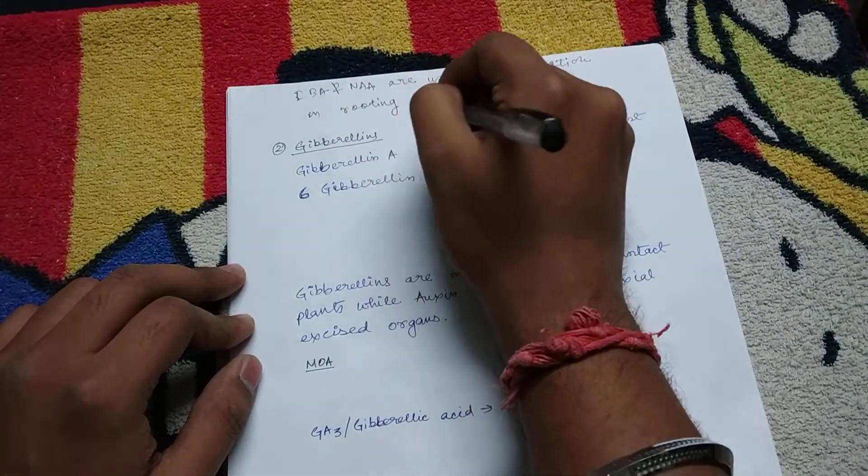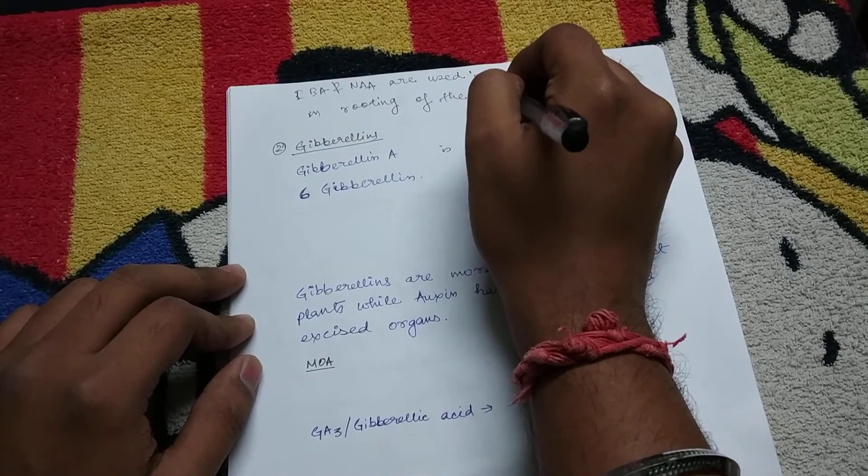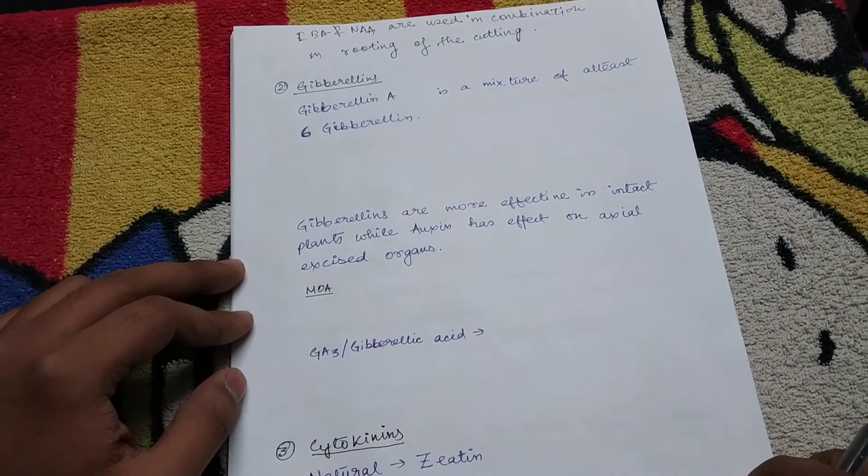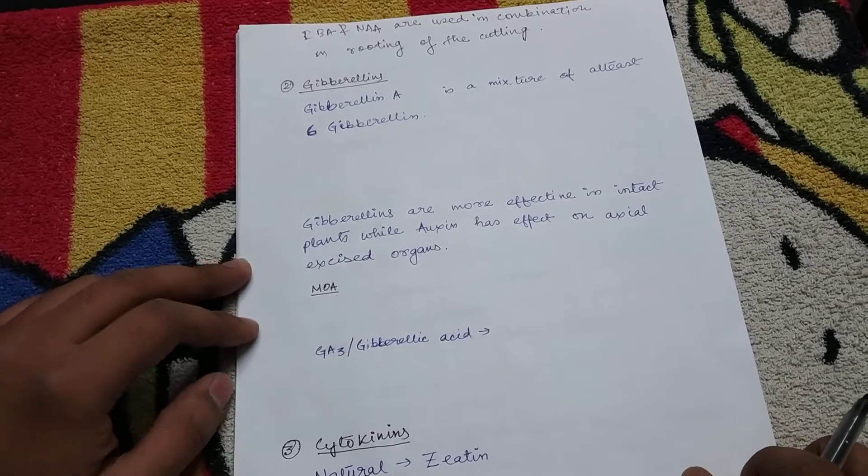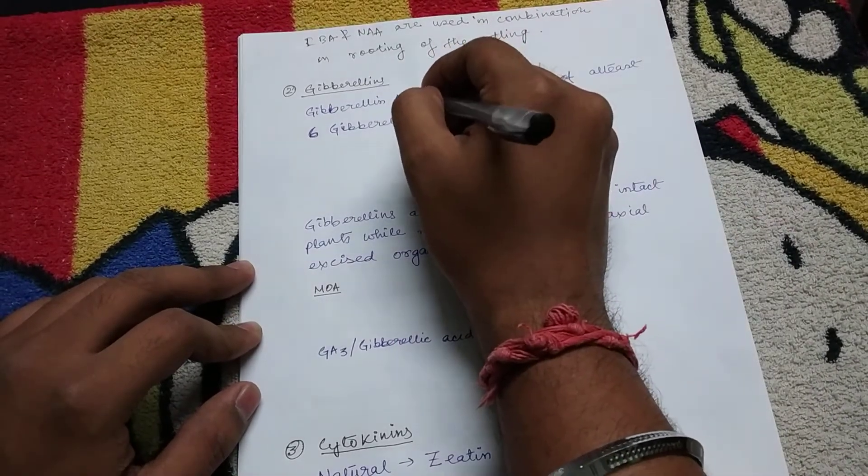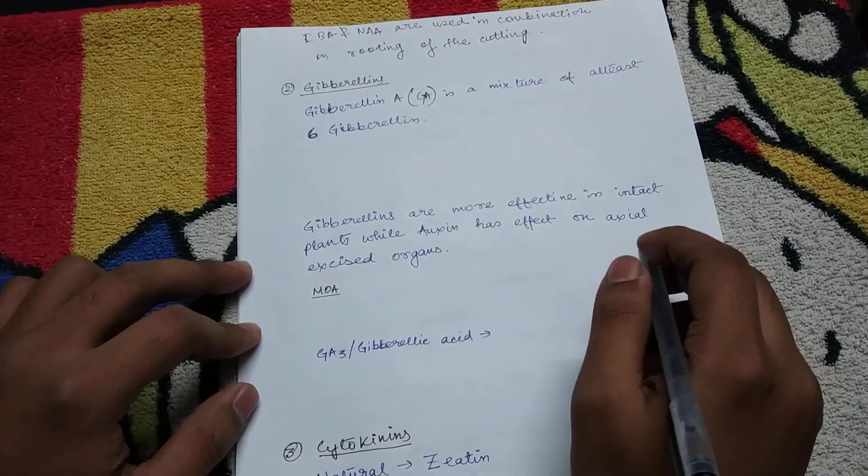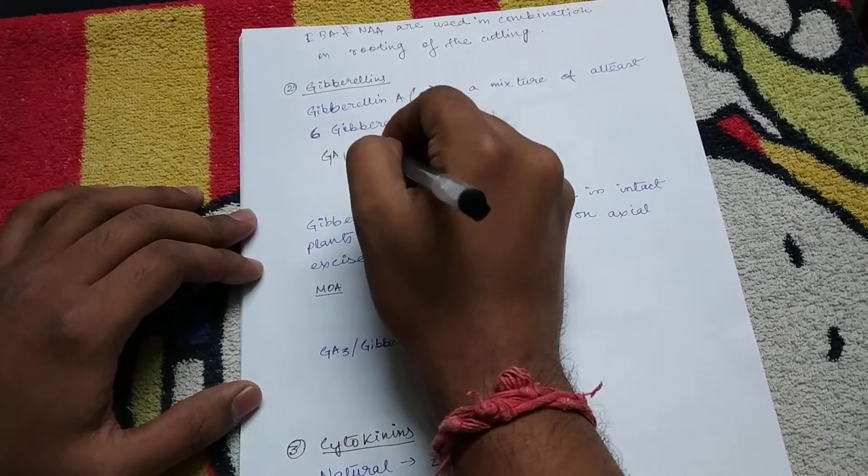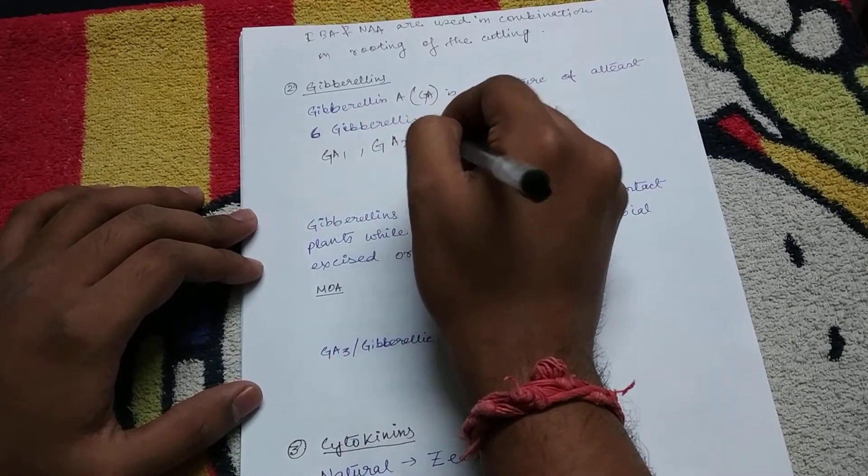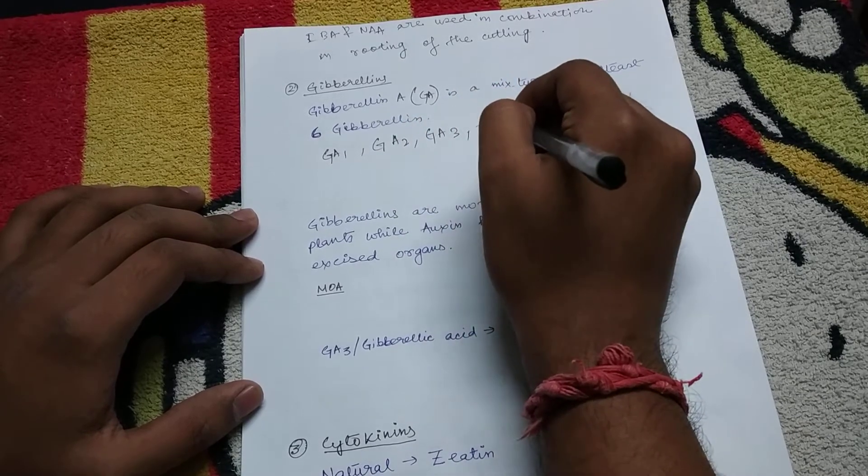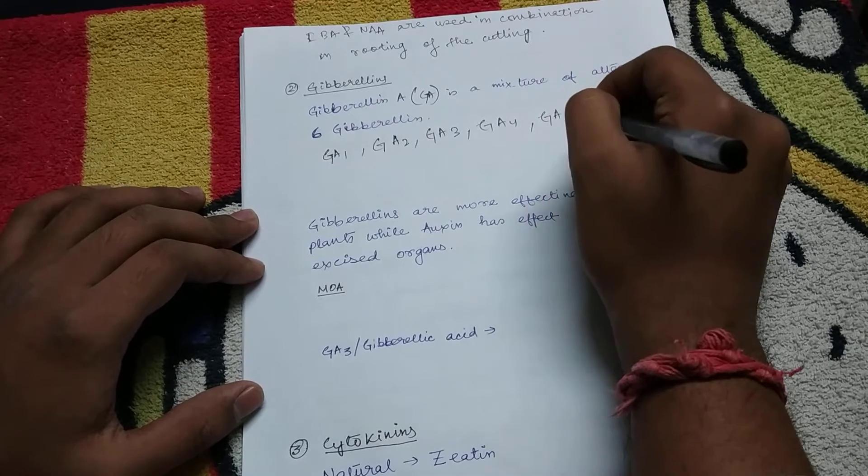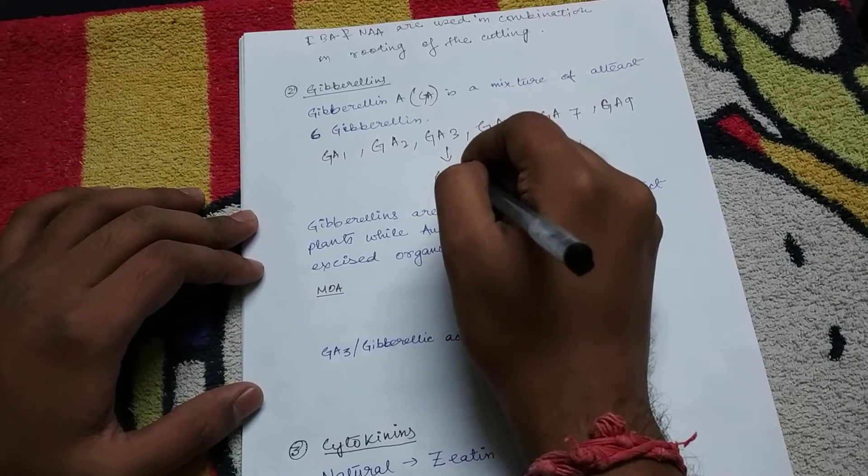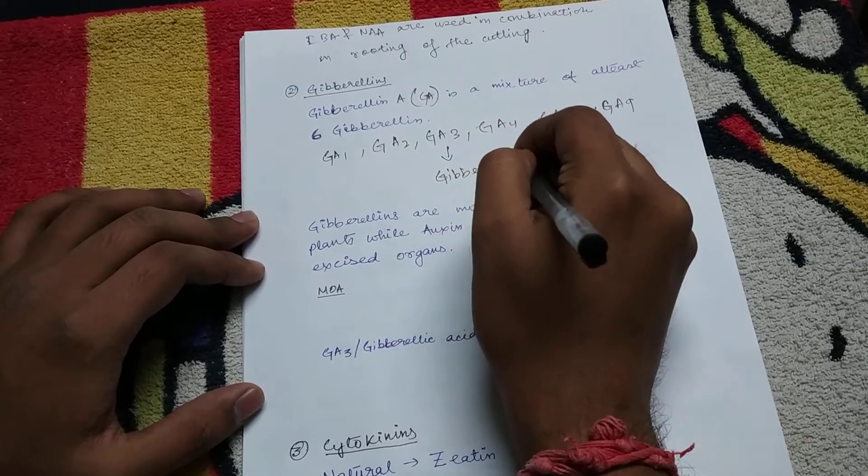Now the second growth regulator is gibberellin. Gibberellin A or GA is a mixture of at least 6 gibberellins: GA1, GA2, GA3, GA4, GA7, and GA9. The GA3 is known as gibberellic acid.